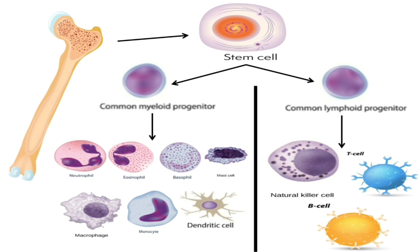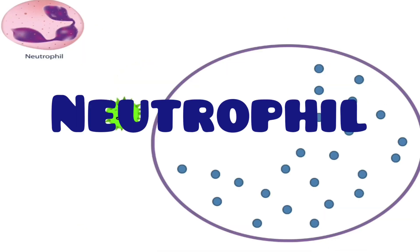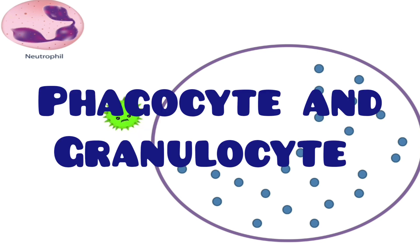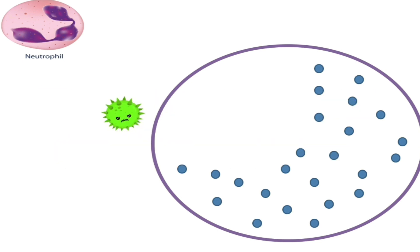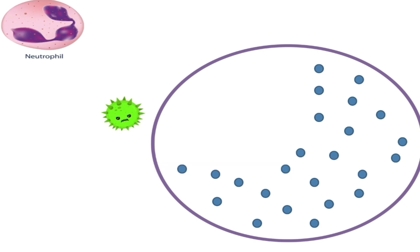The first soldier we are going to talk about is the neutrophil. Neutrophil is both a phagocyte and a granulocyte — a phagocyte because it performs phagocytosis, or the pathogen engulfment process, and a granulocyte because it has granules inside it.